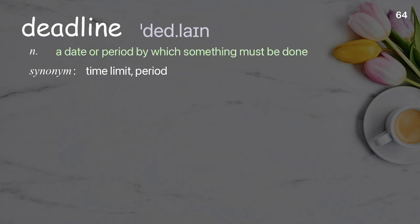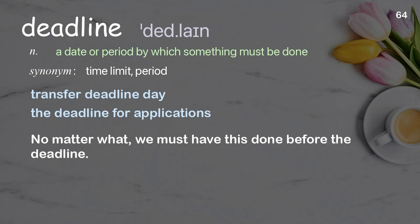Deadline: a date or period by which something must be done. Examples: transfer deadline day, the deadline for applications. No matter what, we must have this done before the deadline.